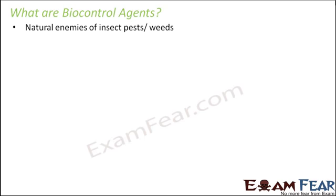Biocontrol agents are nothing but natural enemies of insect pests or weeds. If you have some living organism which is naturally an enemy of insect pests, it will tend to destroy them. For example, if there is an organism which is an enemy of a weed, that organism will always try to kill or eat up or damage the weed. That is desirable to us because weeds interfere with the normal and healthy growth of a plant. So if there is a natural enemy of weed already present, we really do not need to use any insecticide or pesticide, because insecticides and pesticides have several other bad side effects.